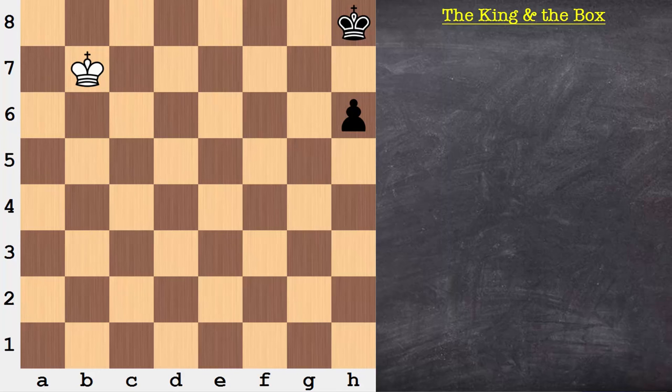Okay, the answer is yes, and we can see that by mapping out the moves. Sure enough, the white king will be there in time to successfully track the pawn down.